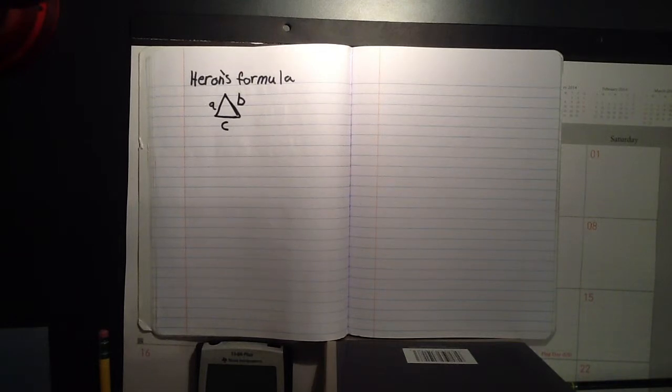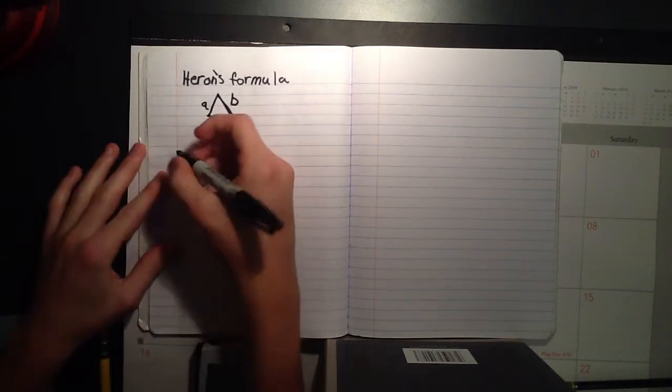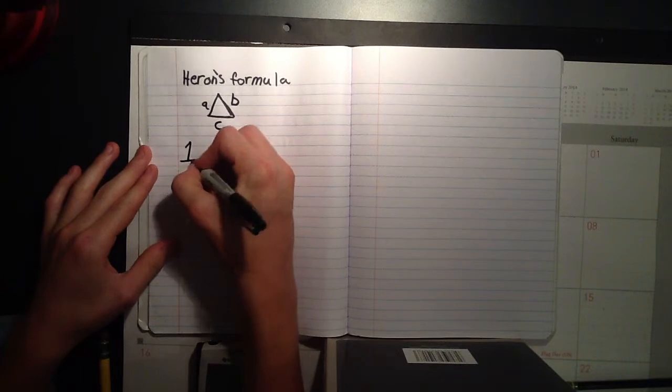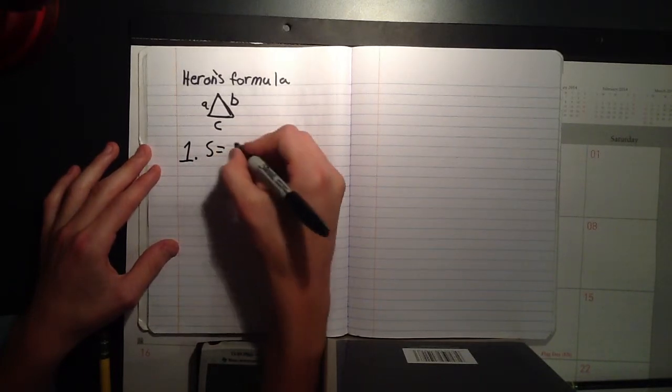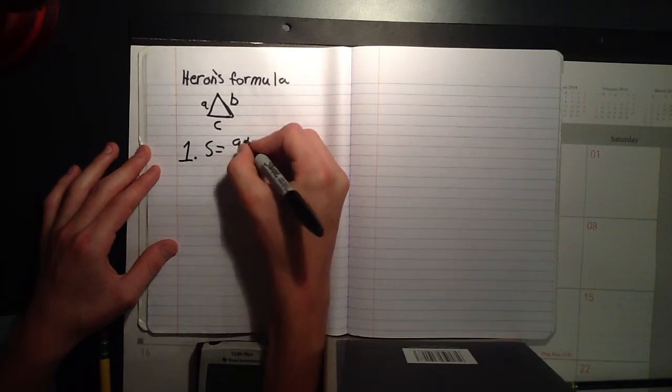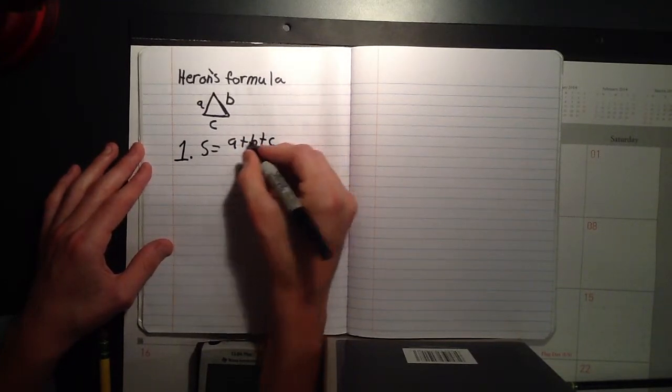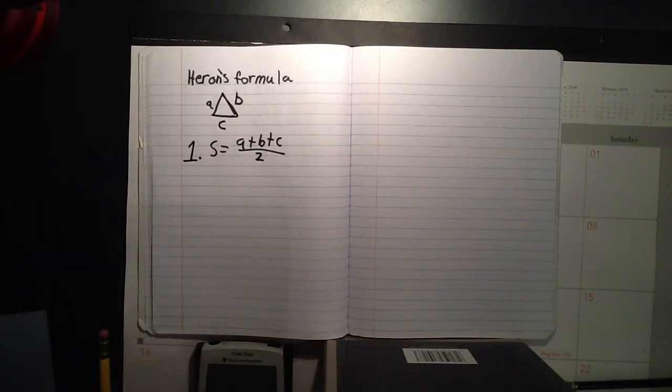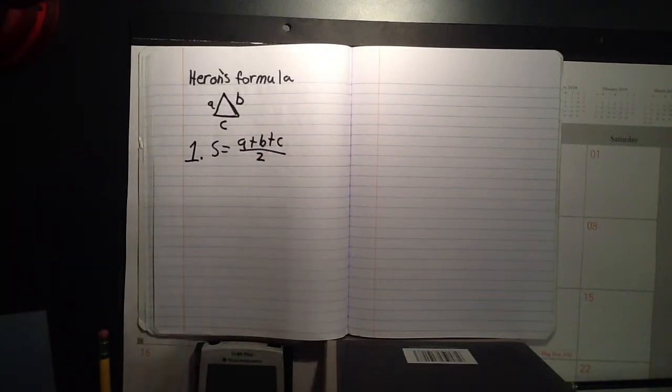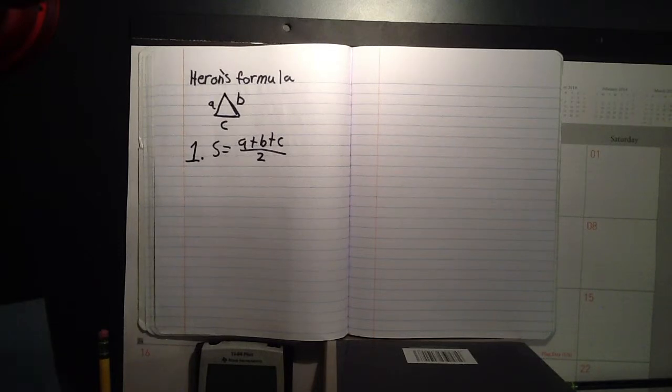Now, Heron's formula is two separate steps. The first step is S equals A plus B plus C over 2. And this helps you find half of the perimeter. So that's half of A plus half of B plus half of C, half of the perimeter.